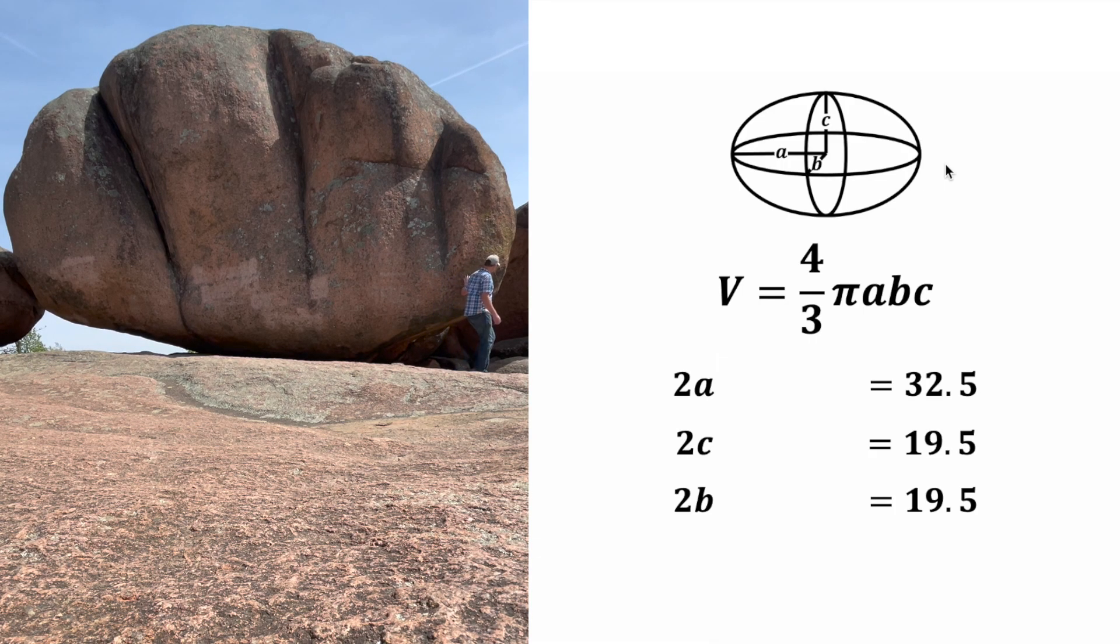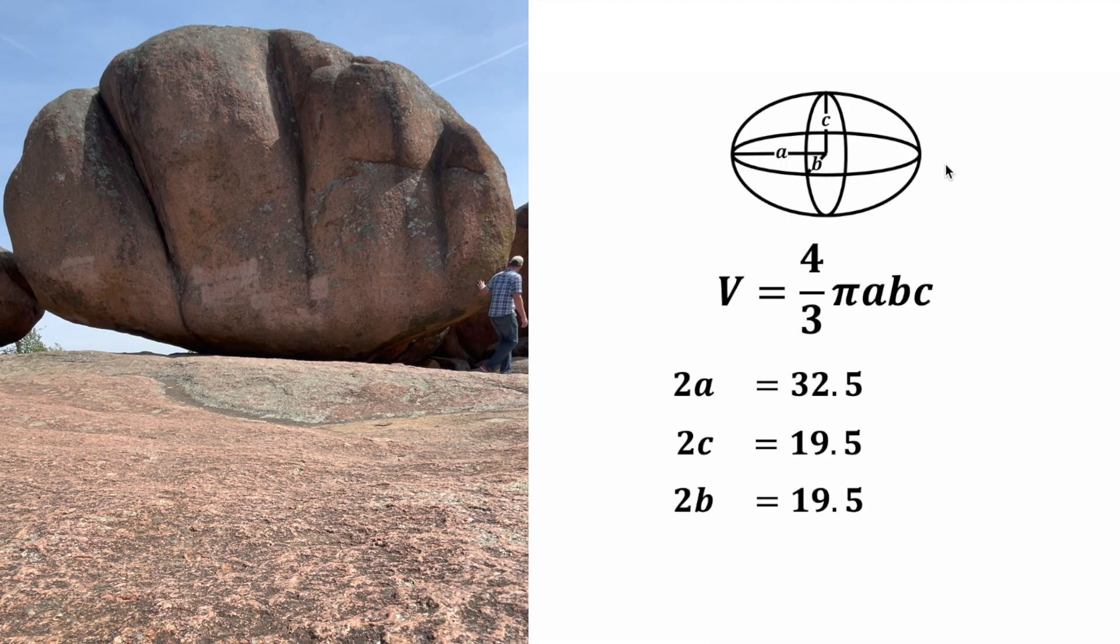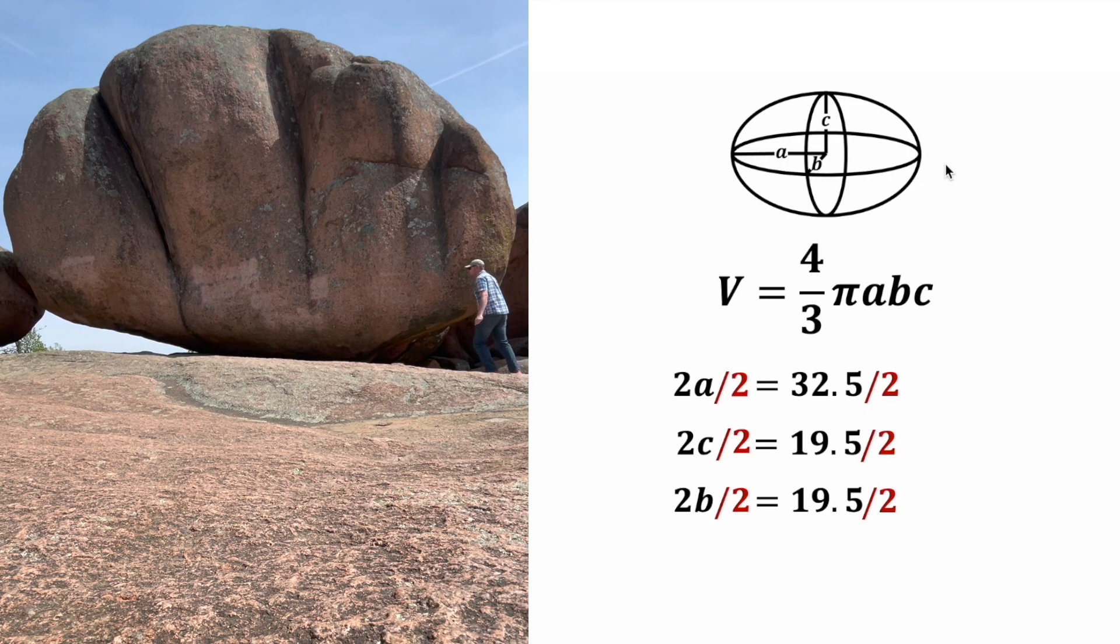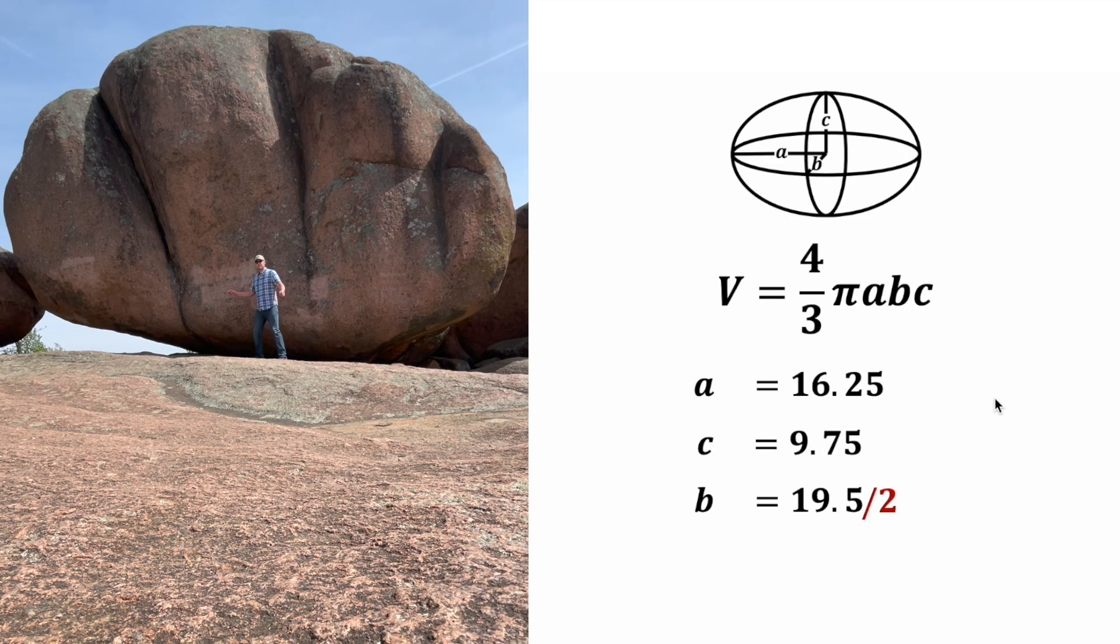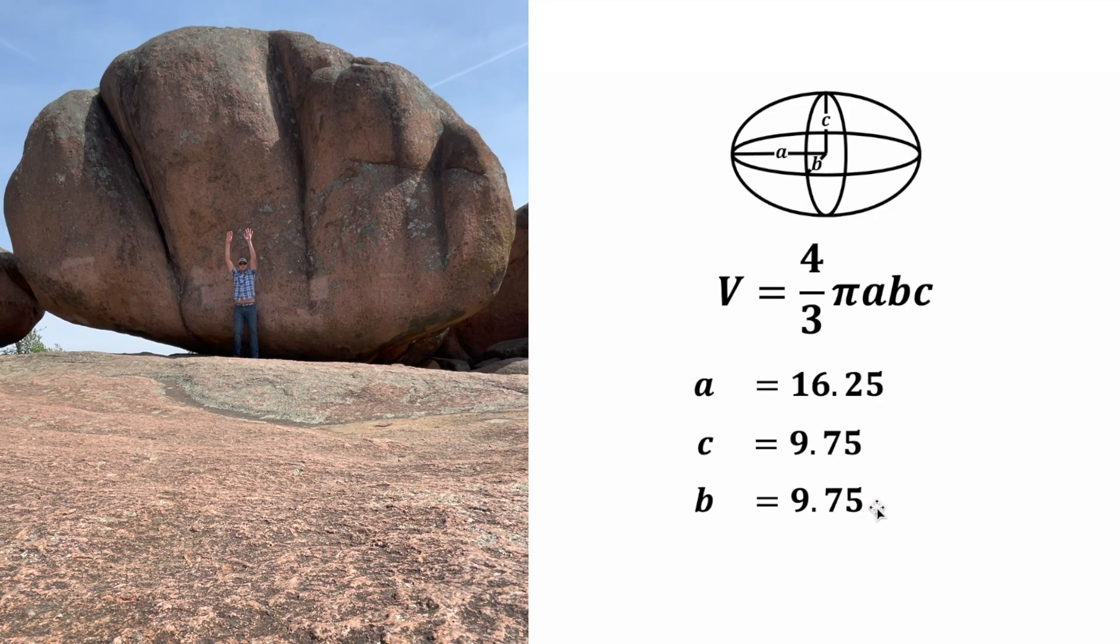So let's clean all this up, scoot these over, and I want to know what A, B, and C are equal to, so let's divide everything by 2. These will all cancel, and then 32.5 divided by 2 is equal to 16.25, and 19.5 divided by 2 is equal to 9.75. So both of these are 9.75.